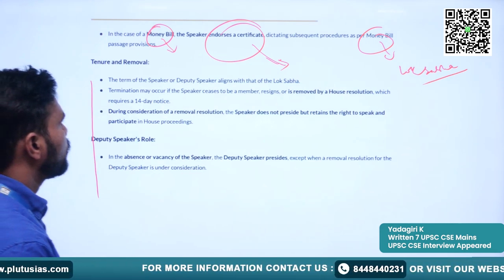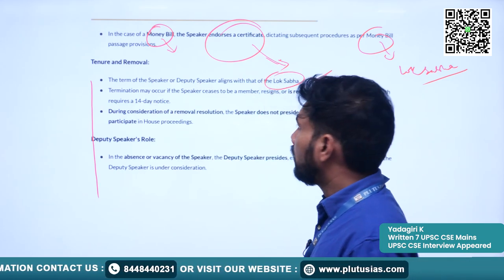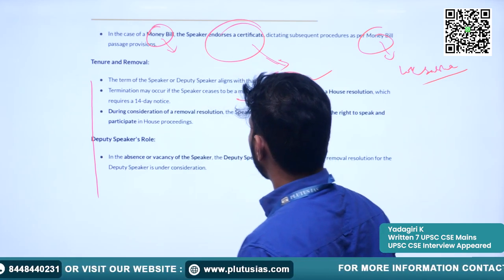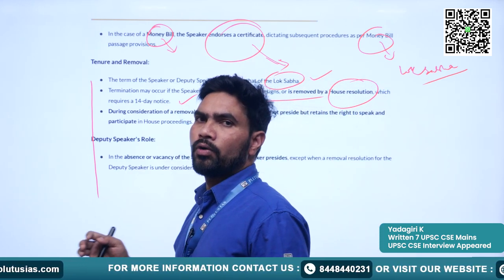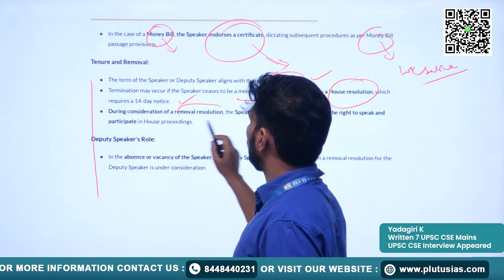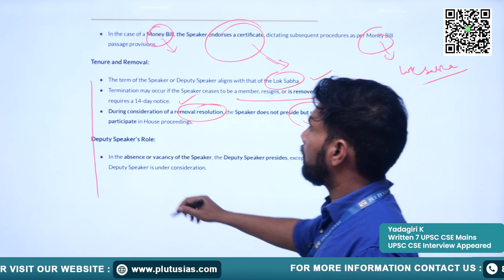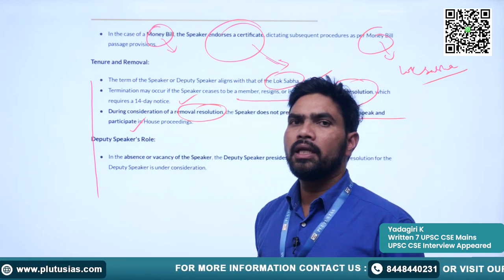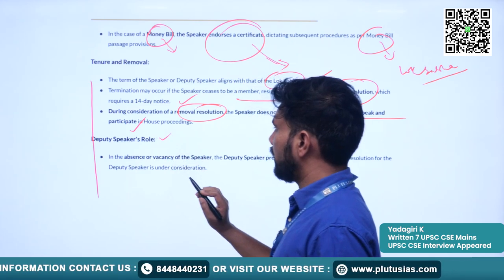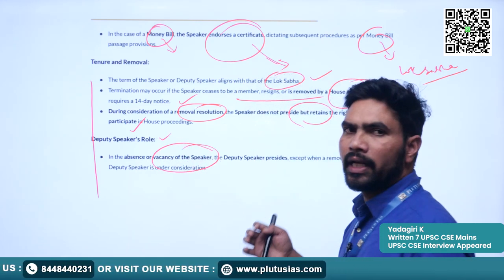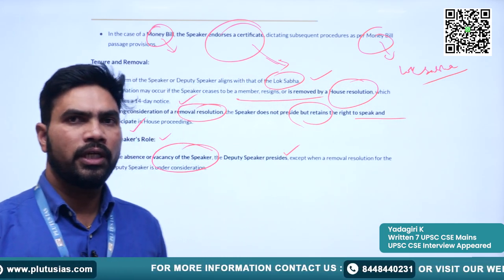Now we will understand the tenure and removal of the speaker. The tenure of the speaker aligns with the tenure of the Lok Sabha. The speaker can be removed from his position by passing a resolution in the house by giving a notice of 14 days. During consideration of a removal resolution, the speaker cannot preside over the Lok Sabha. However, he has the right to speak and participate in house proceedings. The role of the deputy speaker is that whenever absence or vacancy arises in the position of the speaker, the deputy speaker will preside over the proceedings of the Lok Sabha.